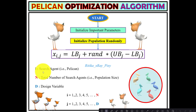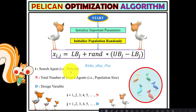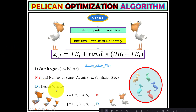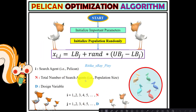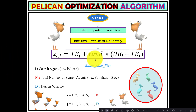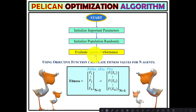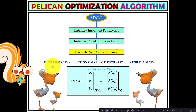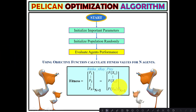In the population initialization equation, i ranges from 1 to N (pelicans) and j ranges over dimensions 1 to d. The lower bound, upper bound, and a uniformly distributed random value (rand) within 0 and 1 are used. Once the population is initialized, the fitness value for each of the N agents is calculated by applying the objective function on the current position.